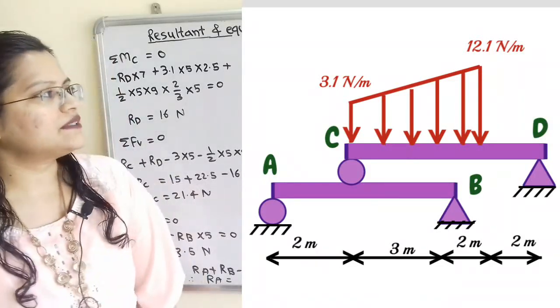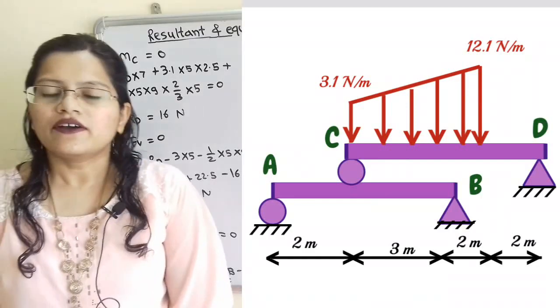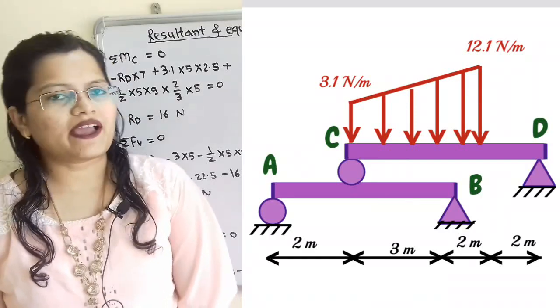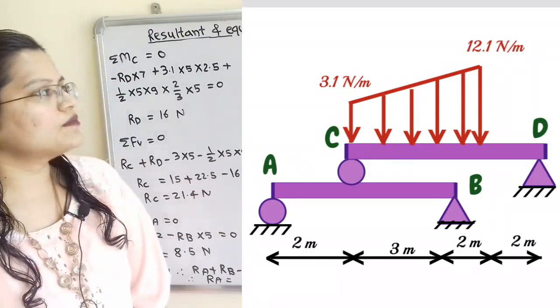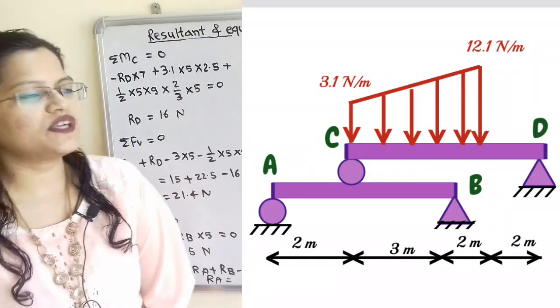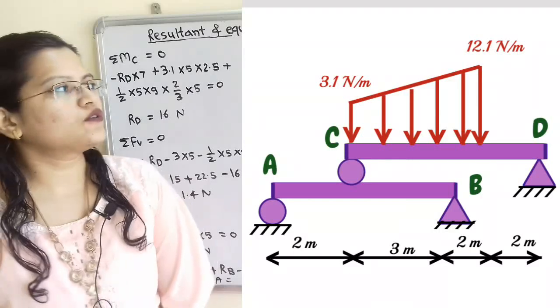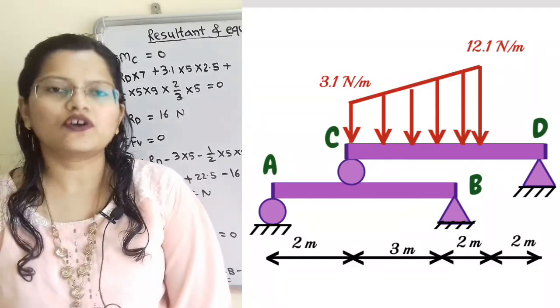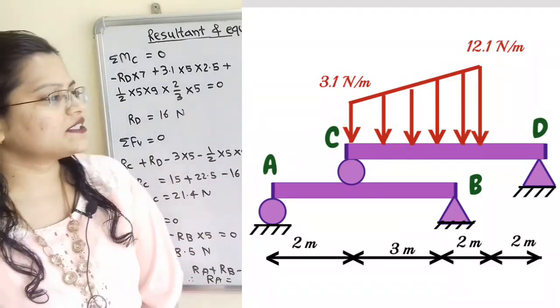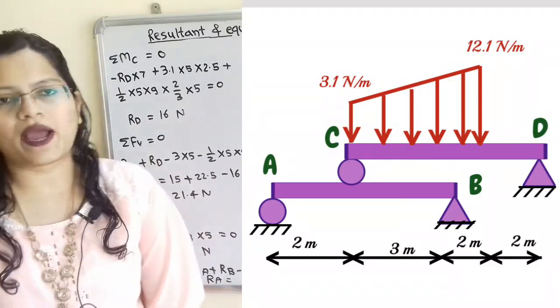For beam CD, a uniformly varying load is given from 3.1 N/m to 12.1 N/m over a span of 5 m.